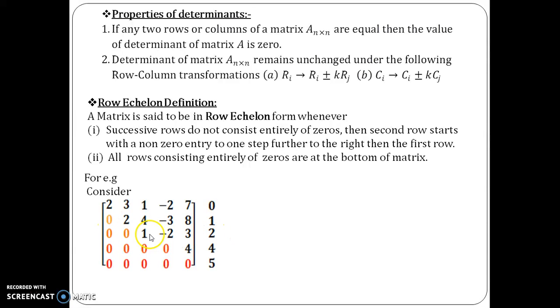Then there are 4 zeros, then like that and then there are 5 zeros. So, this is one example that helps you to understand the number of zeros goes on increasing in a row echelon form.